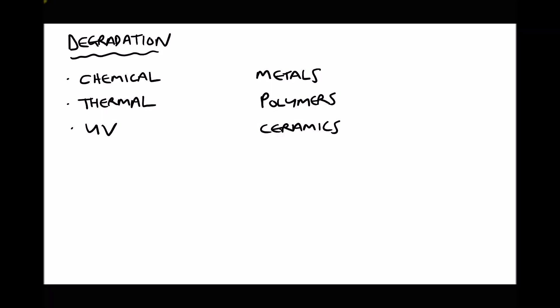Hello, this is Andy from the Engineers Academy. In this video we're going to look at the degradation of materials. There are three different types of degradation that we're interested in: chemical degradation, also known as corrosion, thermal degradation, and degradation by UV or ultraviolet light.